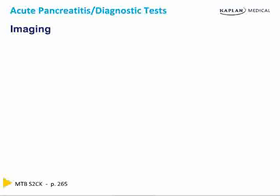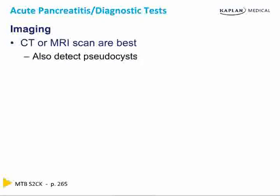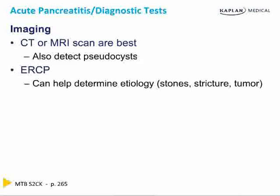As mentioned, imaging is the most specific diagnostic test. CT or MRI scan are best because they also detect pseudocysts. Pseudocysts develop four to six weeks after a bout of acute pancreatitis. ERCP can help determine the etiology such as stones, a stricture, or even a tumor — but don't forget, ERCP is also a cause of acute pancreatitis.